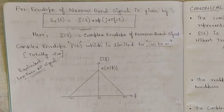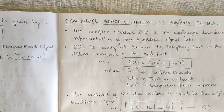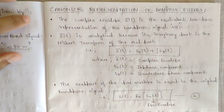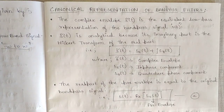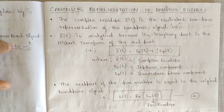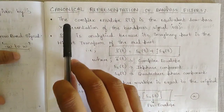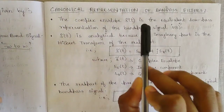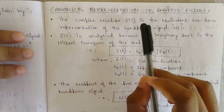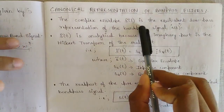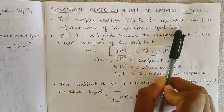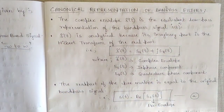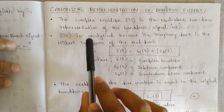Note these points for the canonical representation of bandpass filters. The complex envelope s̃(t), generated from a band pass signal s(t), is its equivalent low pass representation. The complex envelope s̃(t) is analytical because its imaginary part is the Hilbert transform of the real part.